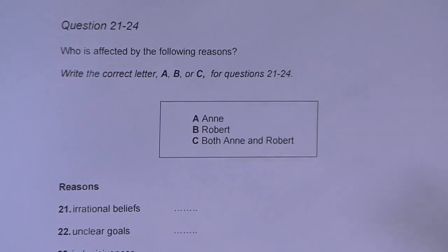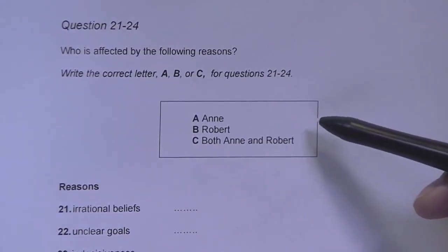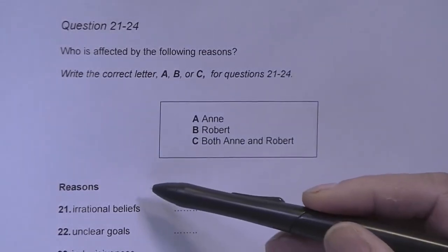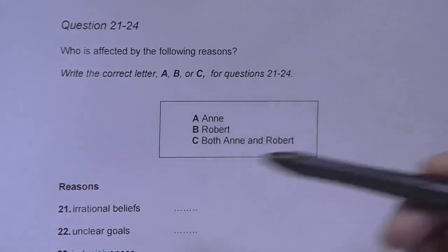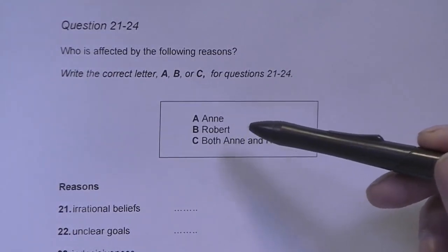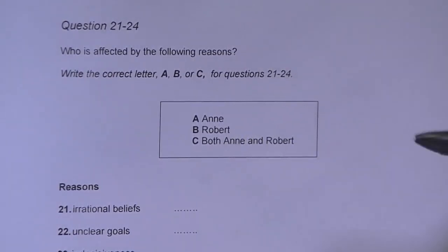In all classification tasks the categories are of the same type. In this case people and the numbered features are the same type as well. They are reasons in this example. Notice that you must only write one of these letters A, B or C next to each question number on your answer sheet.